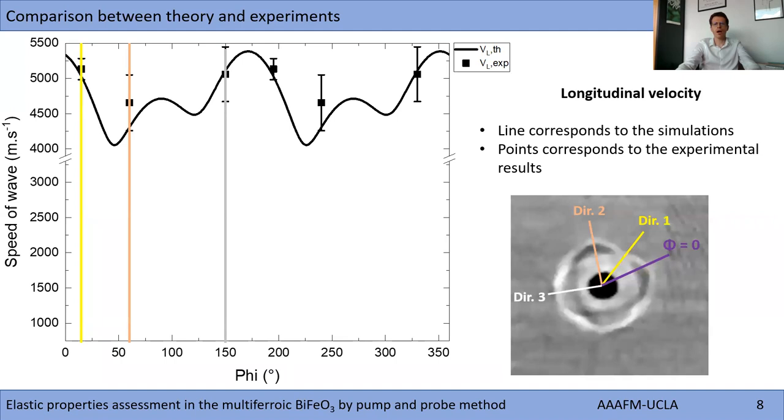Now I present the calculated and experimental velocity associated with the three bulk waves and the surface wave as a function of the phi angle. The black line corresponds to the calculated longitudinal velocity and the squares represent the experimental points. The vertical lines are associated to the three directions of measurement.